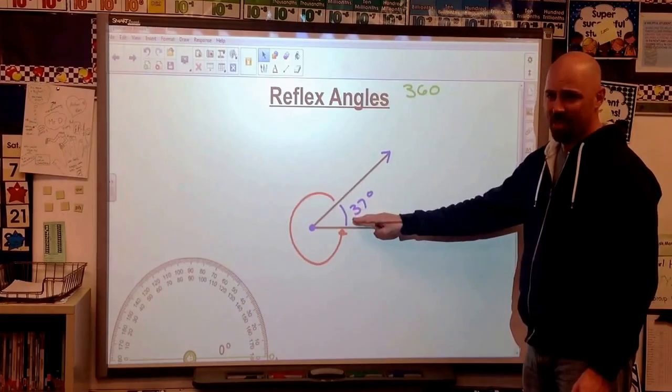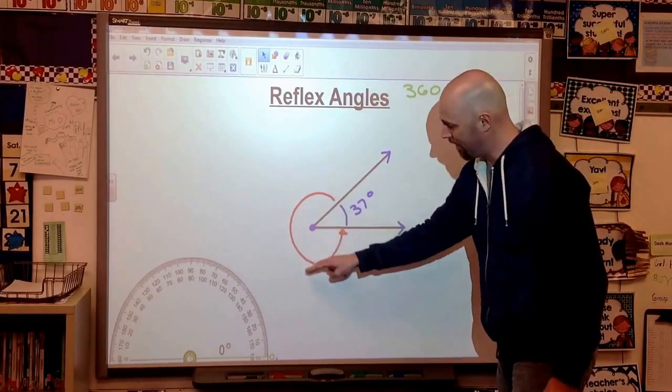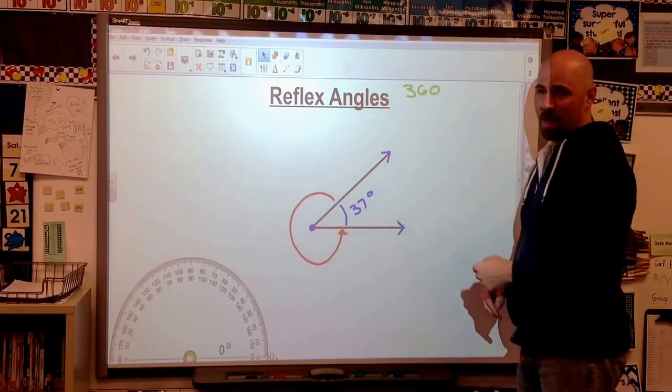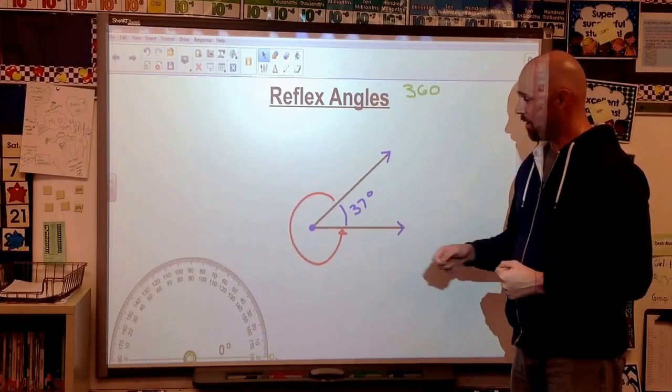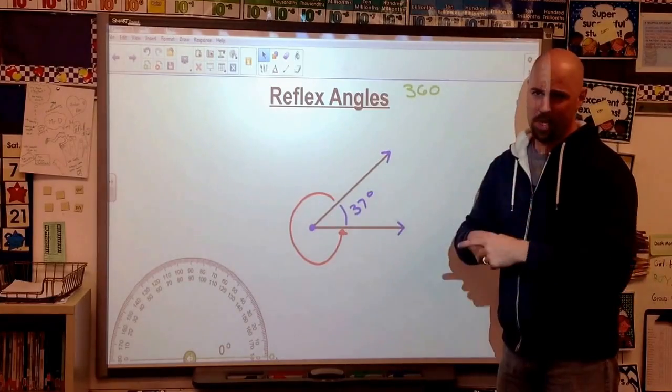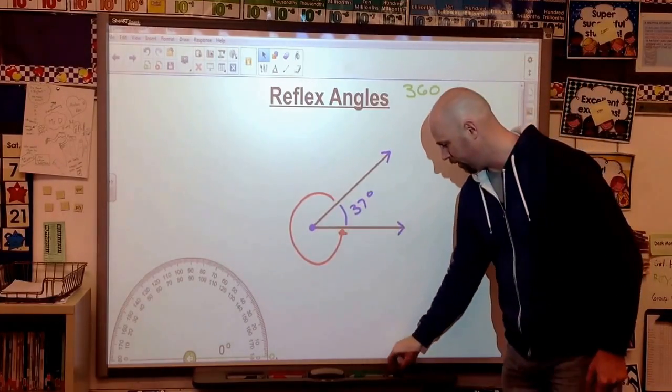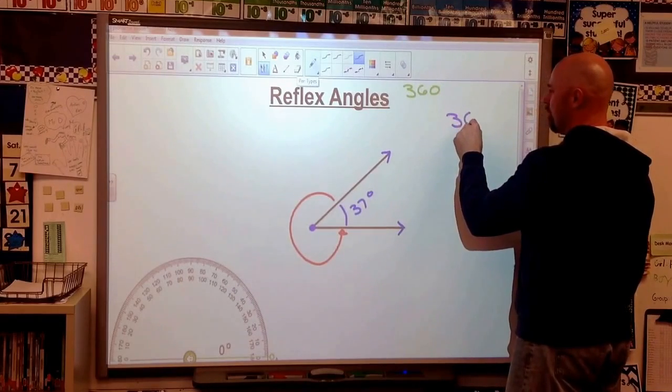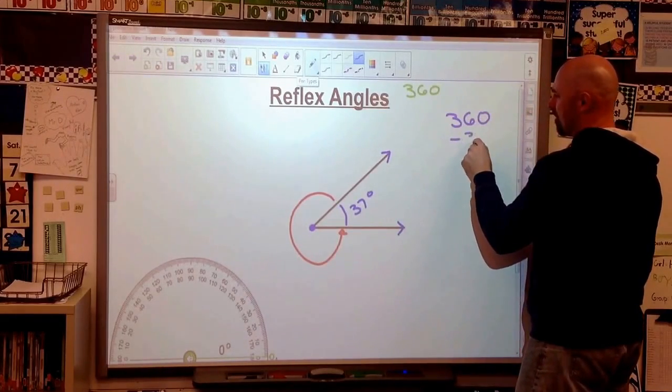So 37 plus something else, this red piece, is going to add up to 360 degrees. And we learned if we want to find out the answer to this, this plus this gives us this. Let's work in the other direction. Let's subtract. We'll go backwards here.